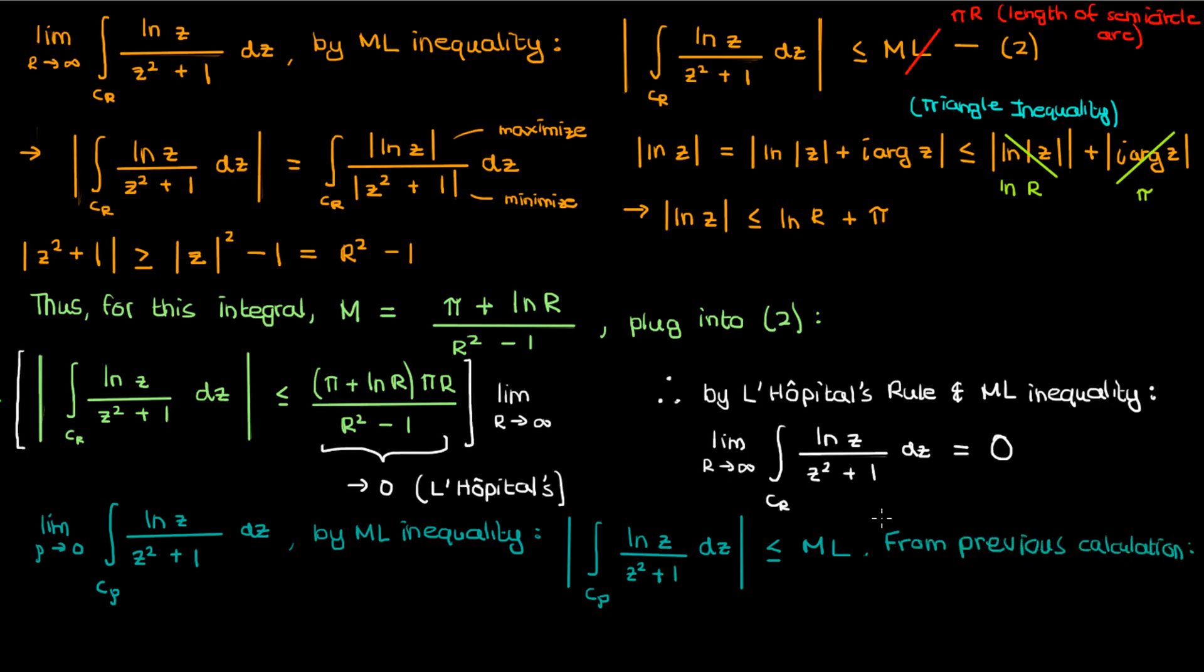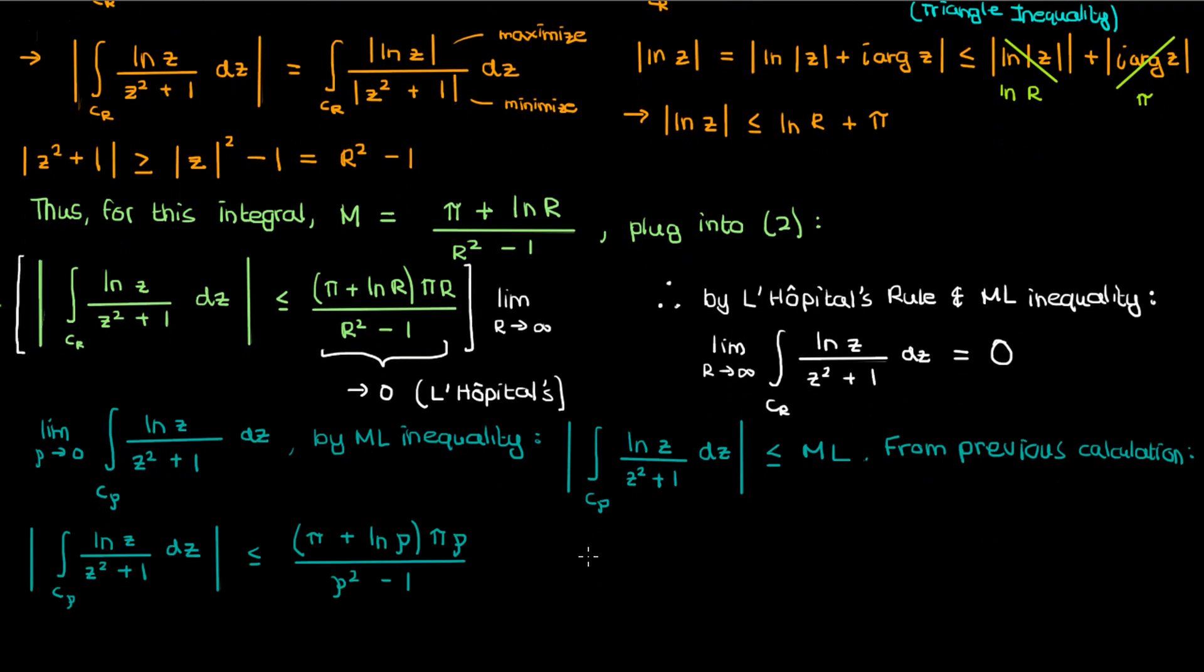The only difference here is that in the denominator, I have 1 minus rho squared because rho is approaching 0, so rho is a small number. So rho must be less than 1. We can't have rho squared minus 1 because that's negative. And you can verify this identity that the magnitude of rho squared plus 1 must be greater than or equal to 1 minus the magnitude of rho squared.